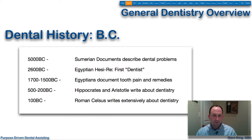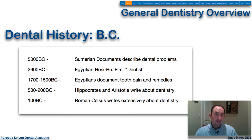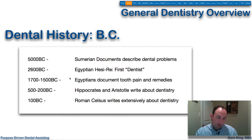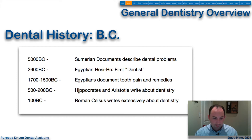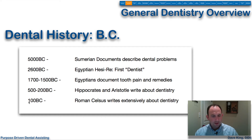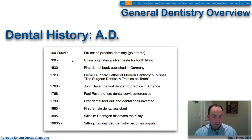Let's take a step back and look at dentistry from prehistory. At 5000 BC, we have some Sumerian documents that describe and discuss dental problems. Around 2600 BC in Egypt, Hezi Ray was the first dentist acknowledged to have provided treatment. The Egyptians then documented tooth pain and remedies for certain tooth pain. Hippocrates and Aristotle wrote about dentistry in 500 to 200 BC. At 100 BC, the Roman Celsus wrote extensively about dentistry. In the 100 to 200 AD range, the Etruscans practiced dentistry with gold teeth.